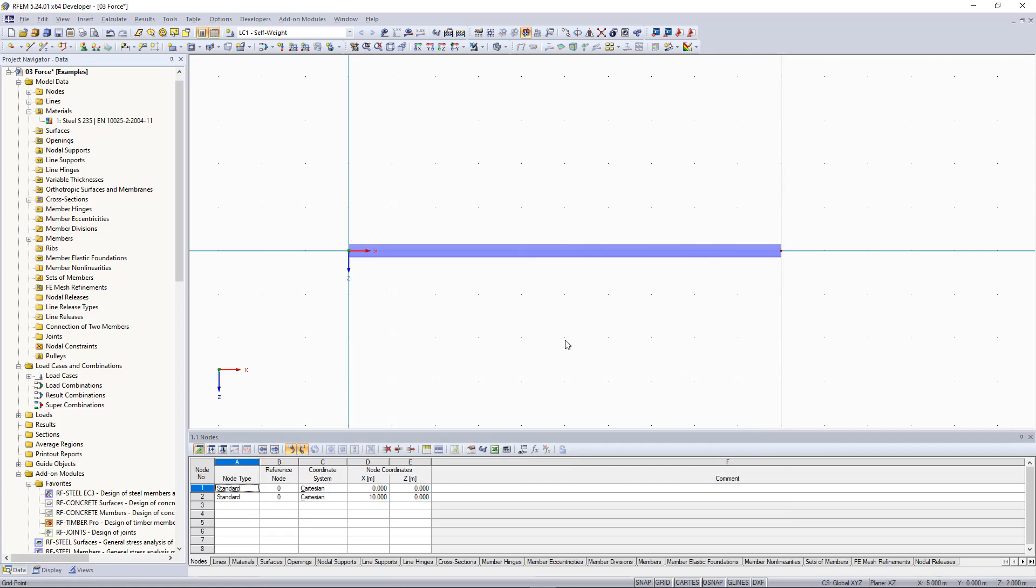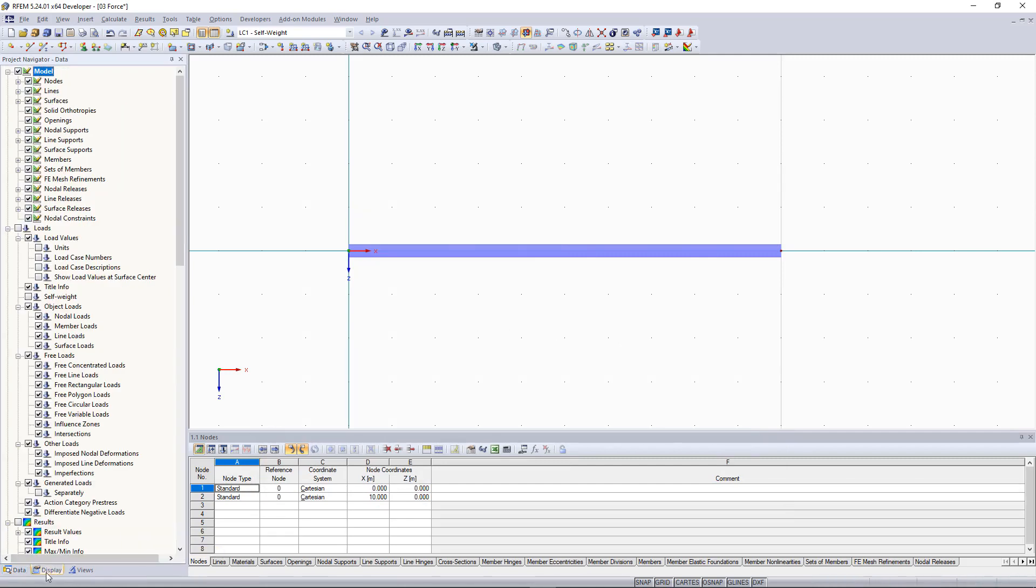We use the display navigator to display the self-weight of the beam in the section. The self-weight of 0.422 kilonewtons per meter resulted from the cross section area multiplied by the specific weight of the steel section.